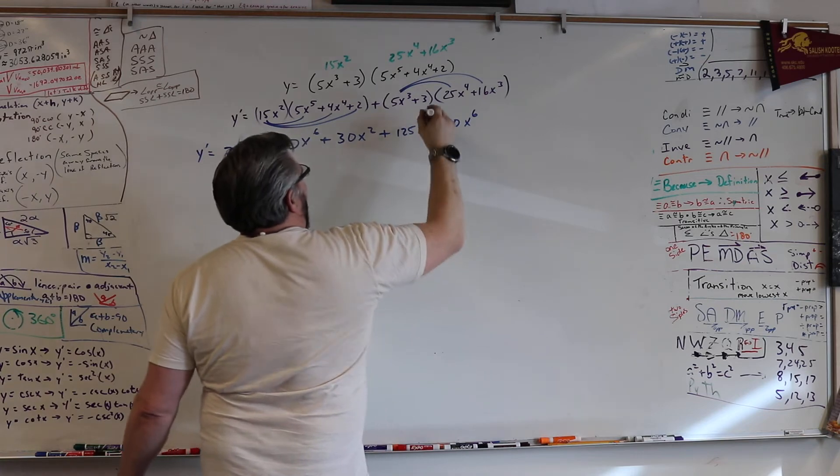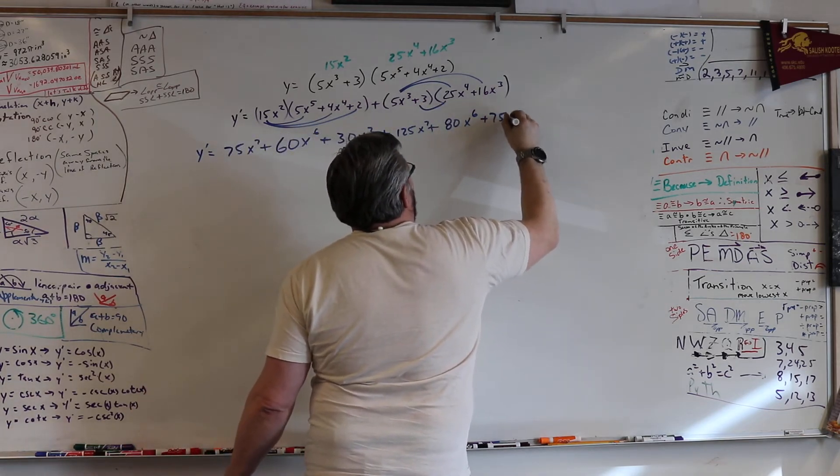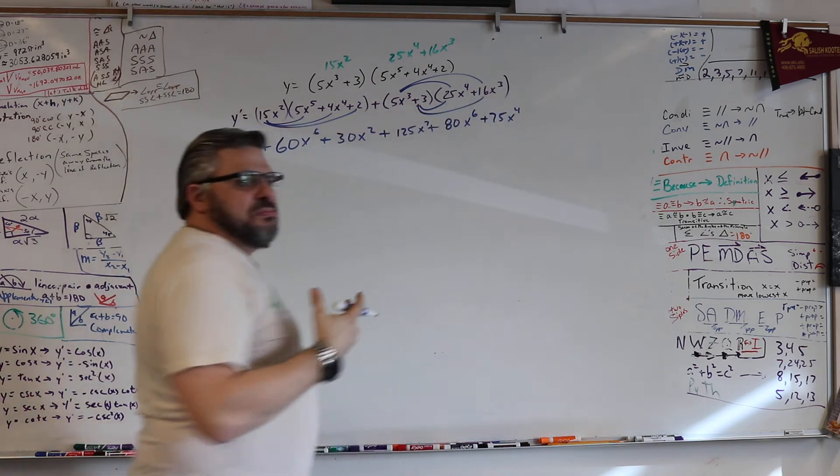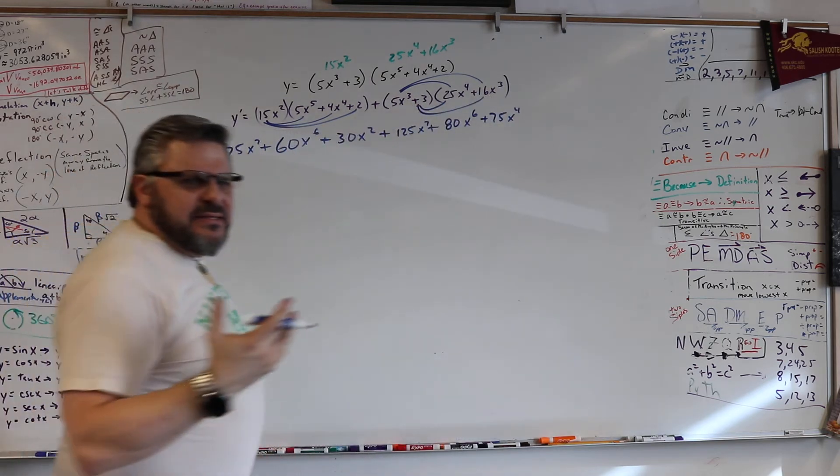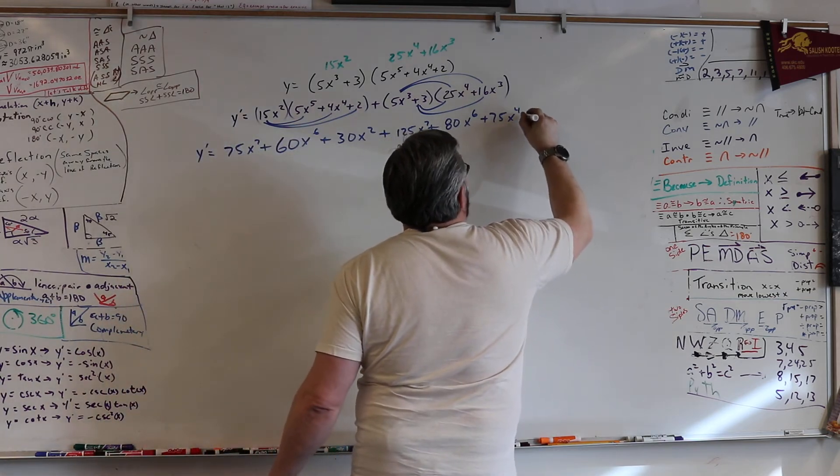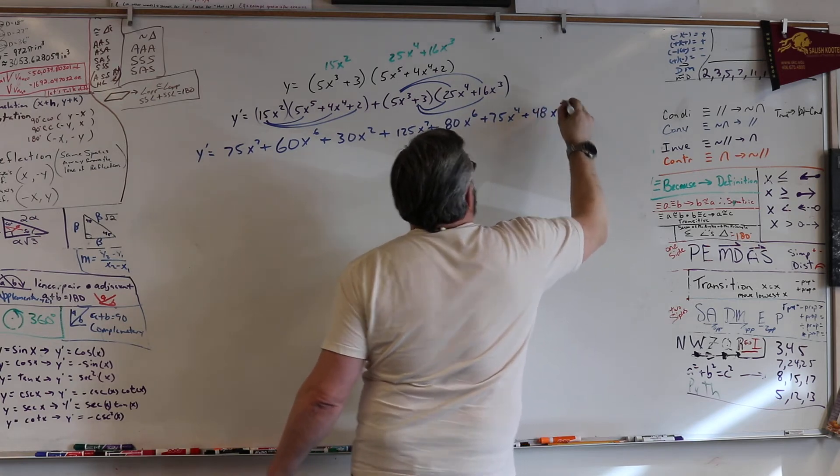And then 3 25's is 75 x to the 4th. And then 3 16's. It'd be 30 and 18. It'd be 48. You guys checking my math? No. That sucks.